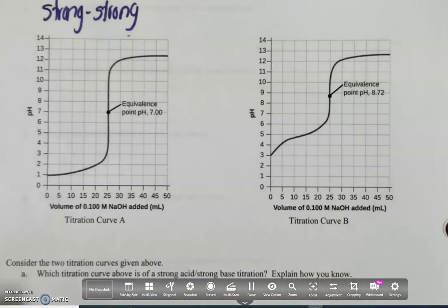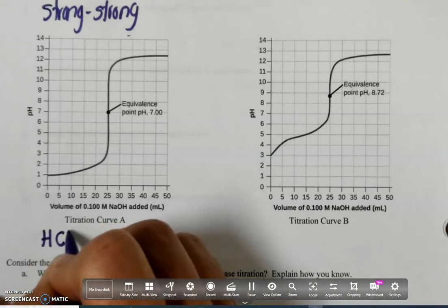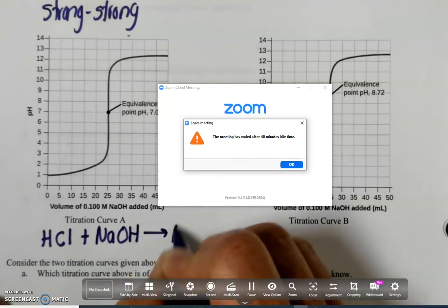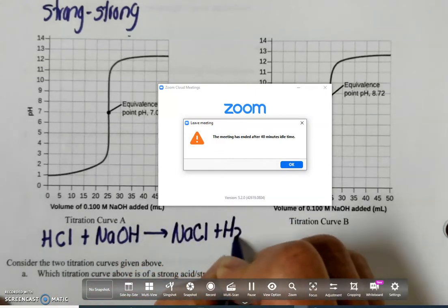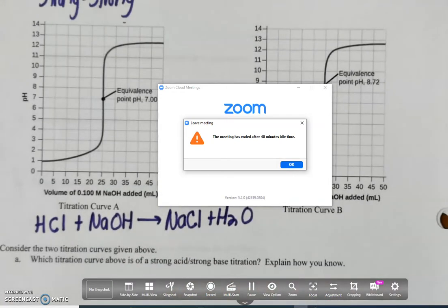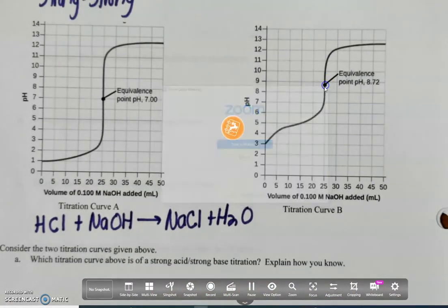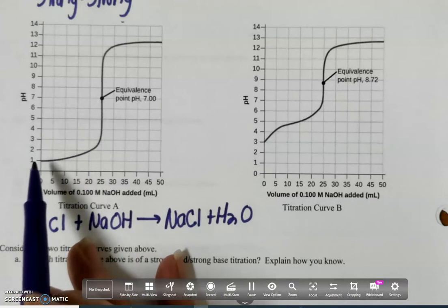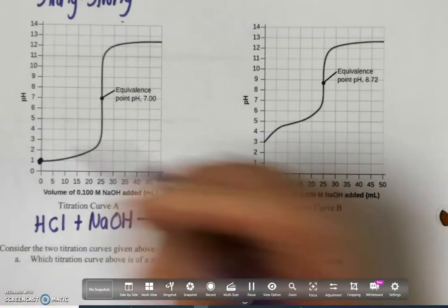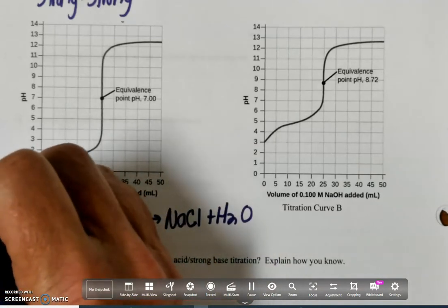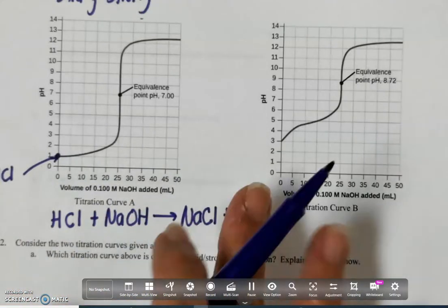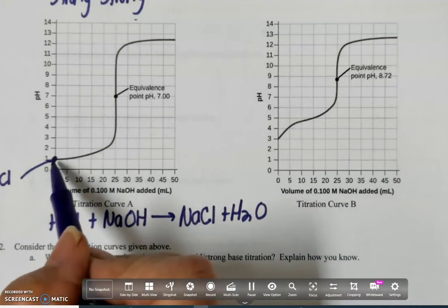I think the easiest one I'll use is going to be hydrochloric acid and sodium hydroxide, which give sodium chloride and water. So that's going to be the overall reaction. I'm going to start at point A and I've got HCl here. That's all I have and that's why the pH is so low.